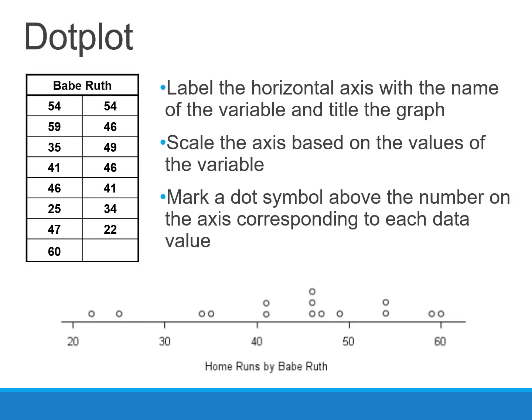Unlike categorical graphs, which only had two options — pie charts and bar charts — there are a number of different ways we can display quantitative data. The first is a dot plot. Here we have a dot plot of the number of home runs hit by Babe Ruth. We can see we have a scale with equally spaced numbers and a label or title across the bottom. We have a dot over each data point. When we have more than one data point, like at 41, we just stack our dots. We can put dots, X's, or any mark.